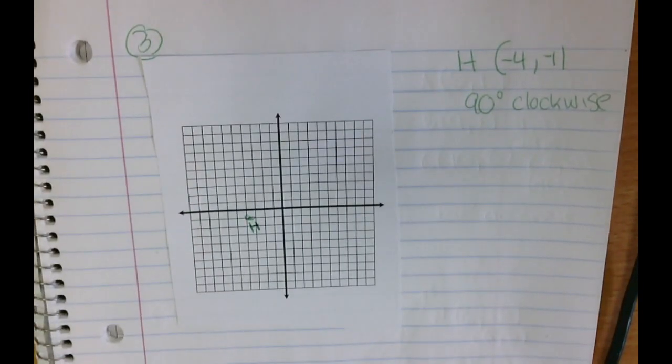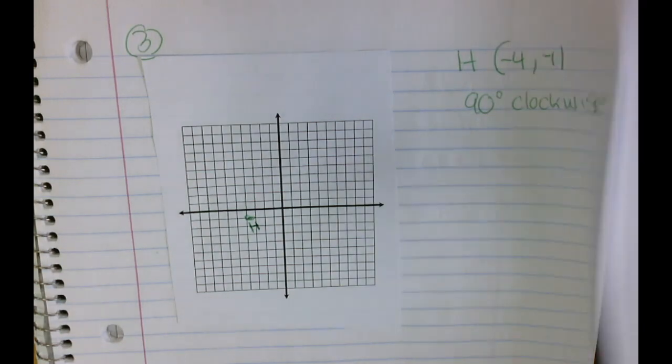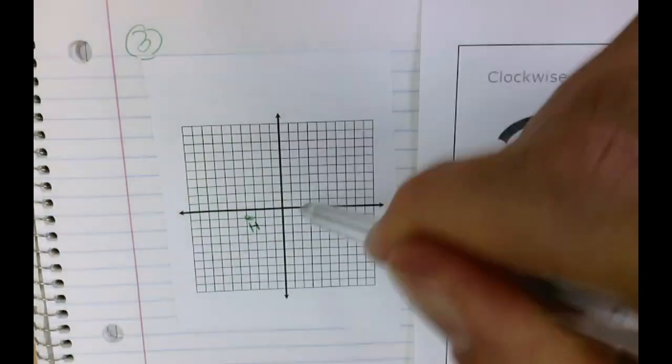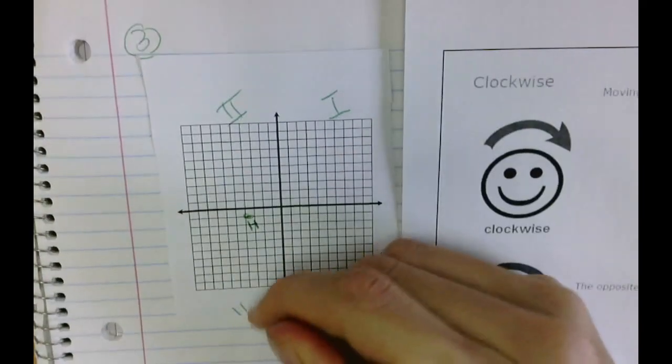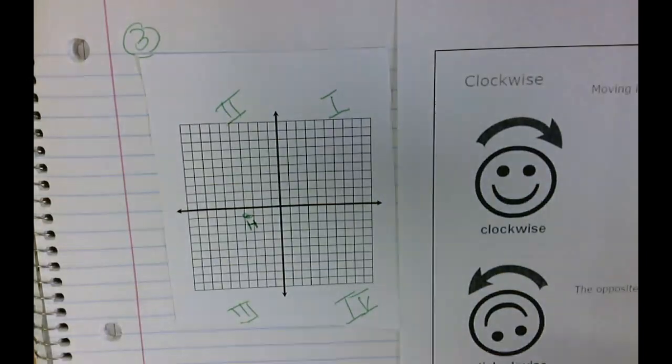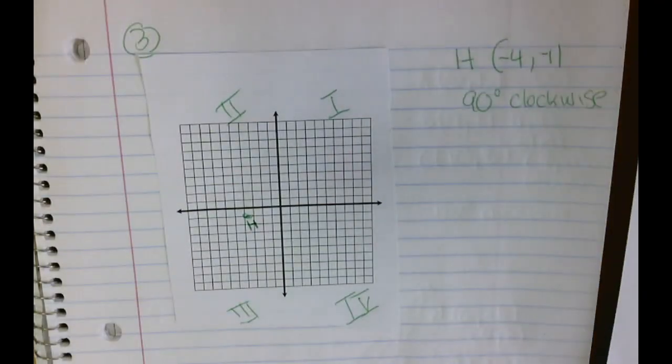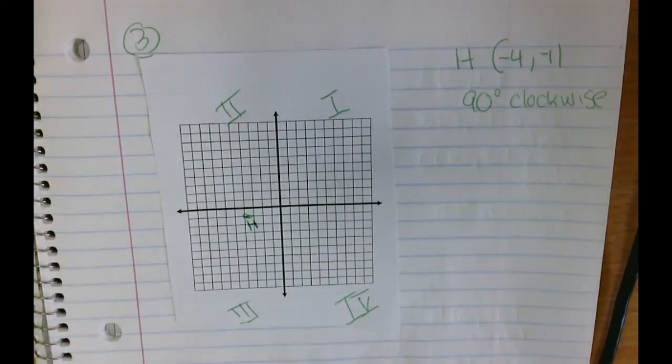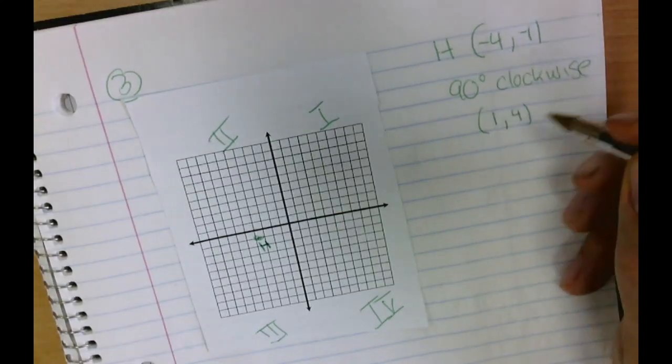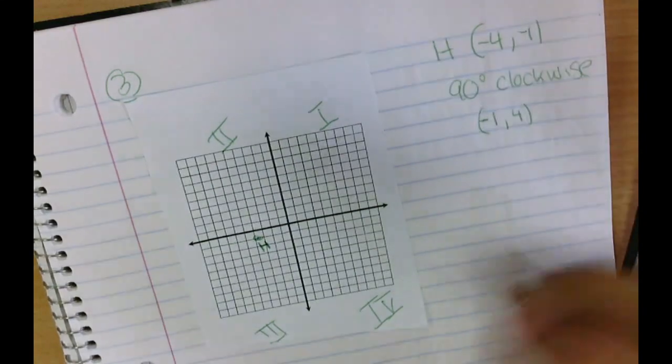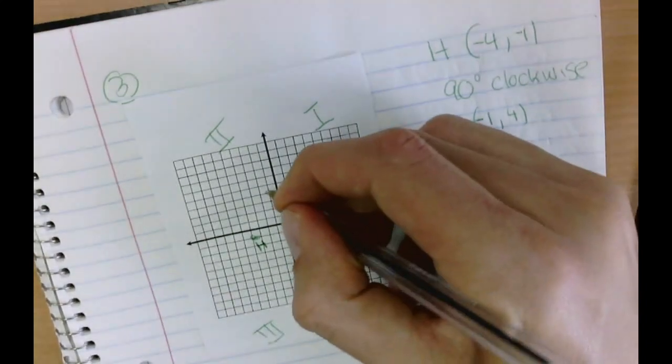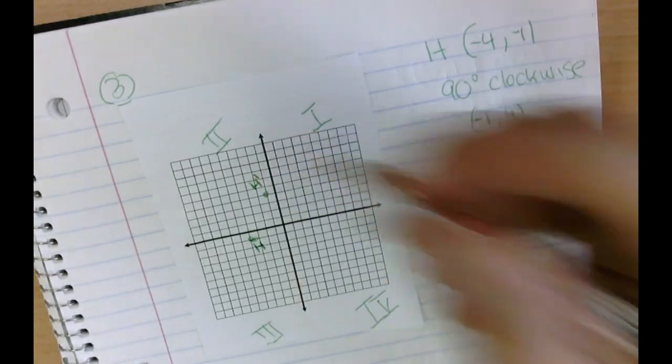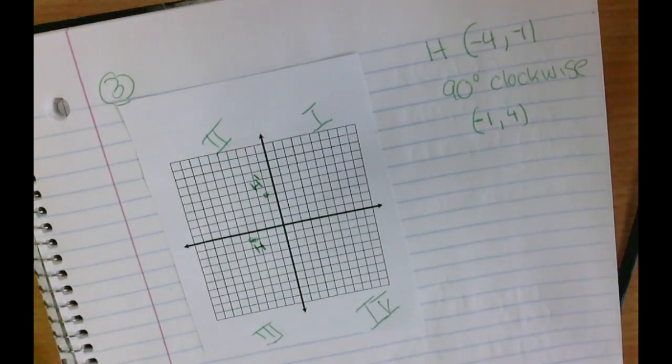Okay, number 3. We have a 90 degrees clockwise turn. And we're going negative 4, negative 1 as our coordinate. So remember, clockwise goes in this direction. So what quadrant are we going to end up in? Well, we're going to end up in this quadrant right here. So we'll flip the points. So we have 1, 4. And because we're in this quadrant here, we'll have negative, positive. 1, 2, 3, 4. And there we go. We have moved our point clockwise about the origin 90 degrees.